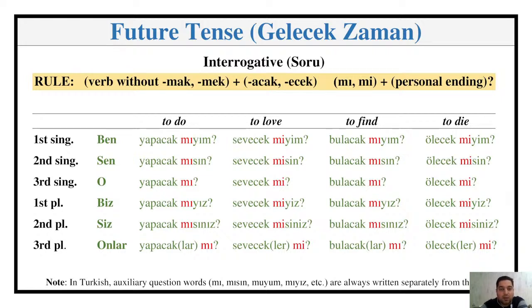First person singular: yapacak mıyım, sevecek miyim, bulacak mıyım, ölecek miyim. Second person singular: yapacak mısın, sevecek misin, bulacak mısın, ölecek misin. Third person singular: yapacak mı, sevecek mi, bulacak mı, ölecek mi. First person plural: yapacak mıyız, sevecek miyiz, bulacak mıyız, ölecek miyiz. Second person plural: yapacak mısınız, sevecek misiniz, bulacak mısınız, ölecek misiniz. Third person plural: yapacaklar mı, sevecekler mi, bulacaklar mı, ölecekler mi.